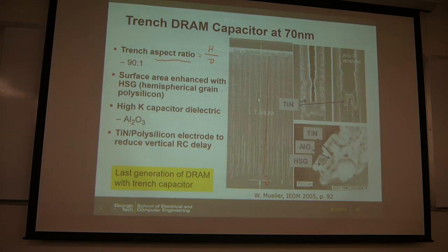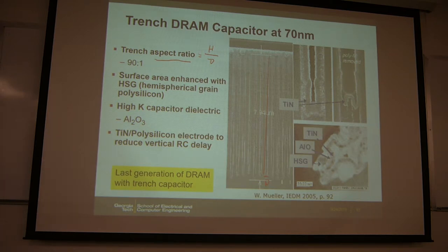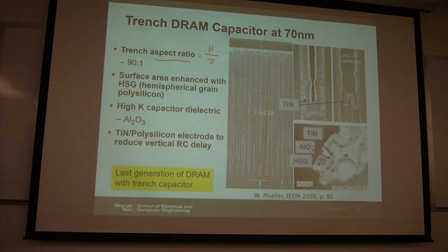Why is the DRAM capacitor always built as this kind of very deep cylindrical or trench structure? It's for larger surface area. You need the CS capacitance value for the cell, and to save lateral footprint, you make a trench and use the sidewall surface area as your capacitor area — you don't consume the two-dimensional density. So you have to build this very tall trench structure.